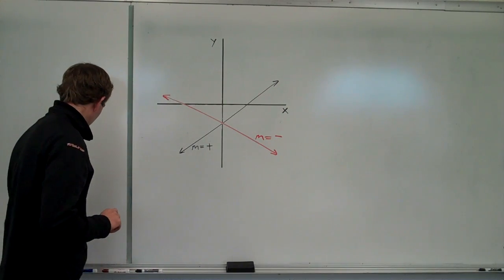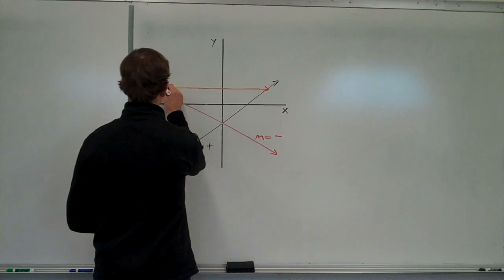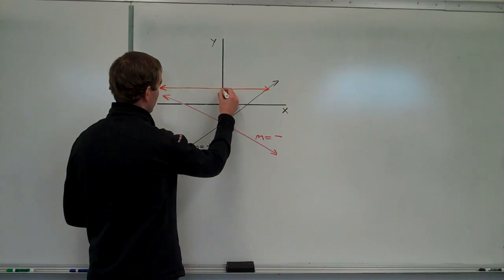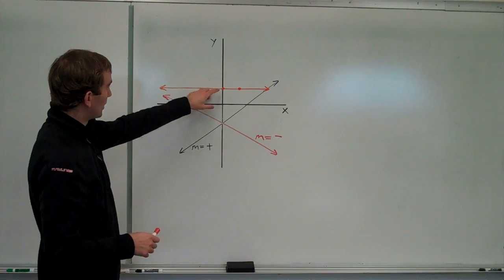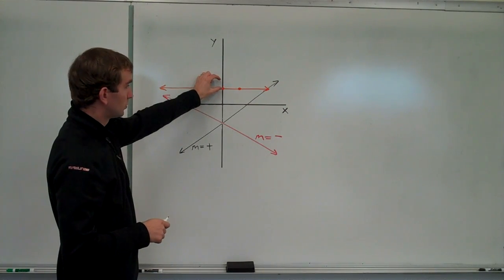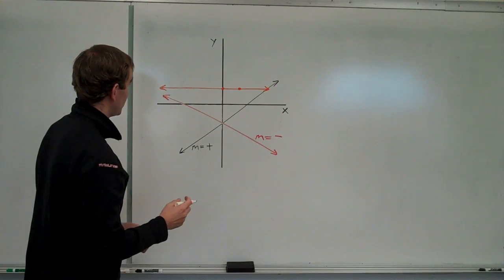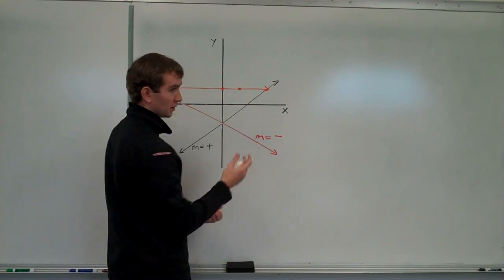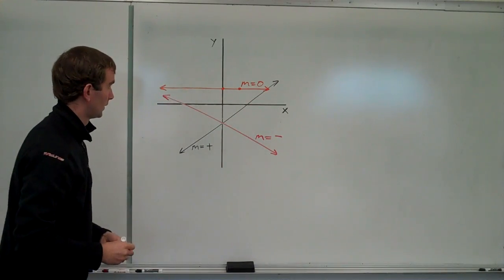Two other cases. I'll do this in orange. One is if we have a horizontal line. A horizontal line. Let's see what that slope will have to be. If I pick any two points, say I pick this point and this point, I'm going to look at my rise and my run. Well, my rise is zero, right? So, it will be zero over whatever my run is. In this case, it could be two units, it could be four units. It really doesn't matter because zero divided by any number is always zero.